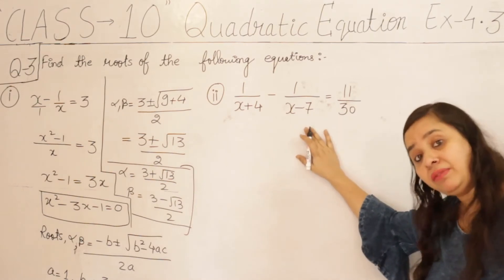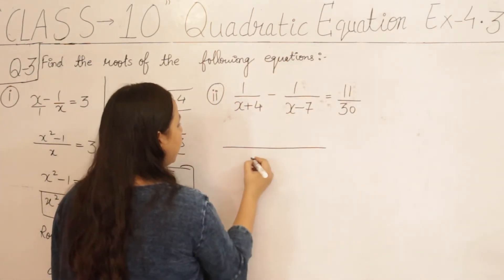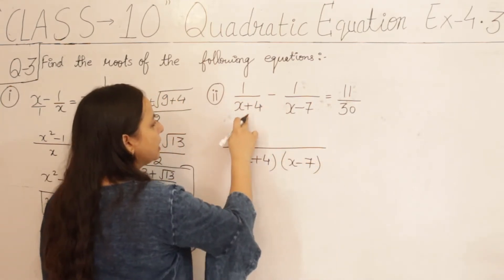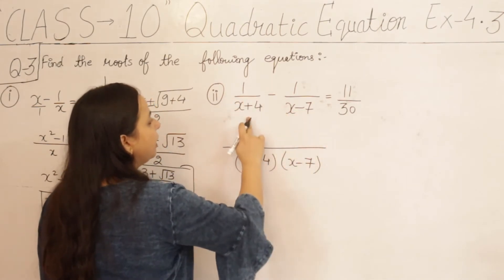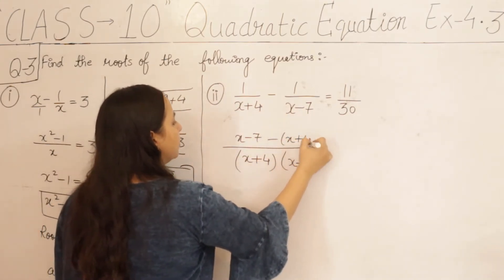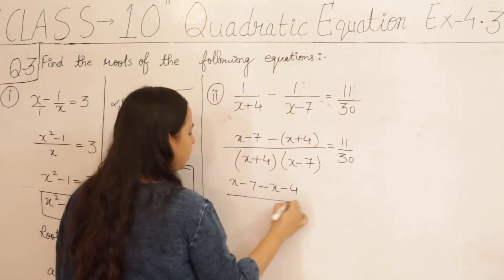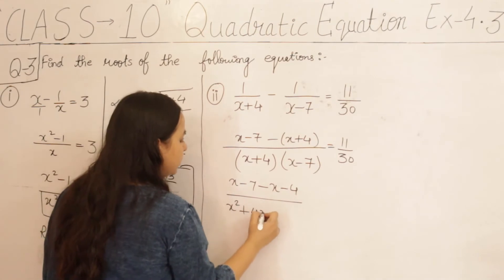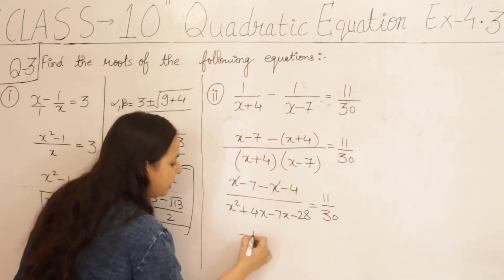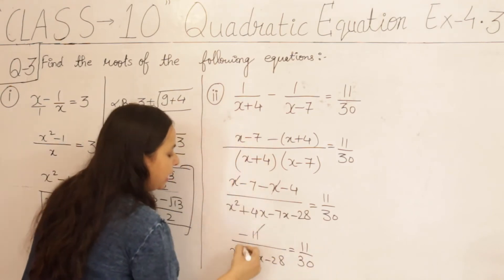In the second equation, we have to solve and find the roots. So first we take the LCM. The denominator will be (x+4)(x−7). In the numerator, we get (x−7) and (x+4) terms. This gives us (x−7)(x+4) equal to 11/30. Opening the bracket: x squared plus 4x minus 7x minus 28 equals 11/30, which simplifies to x squared minus 3x minus 28 equals 11/30.